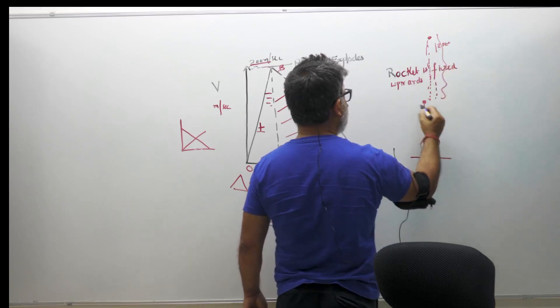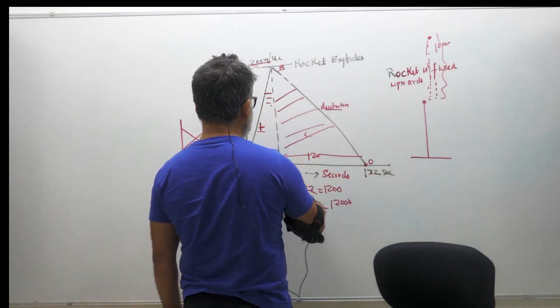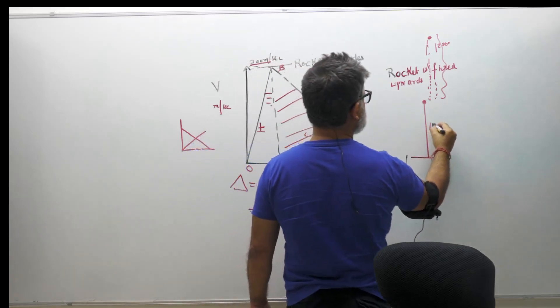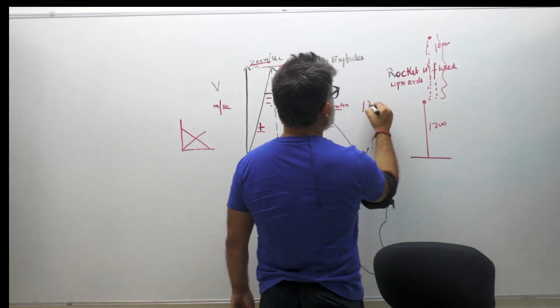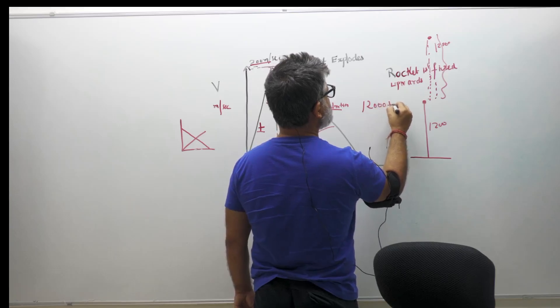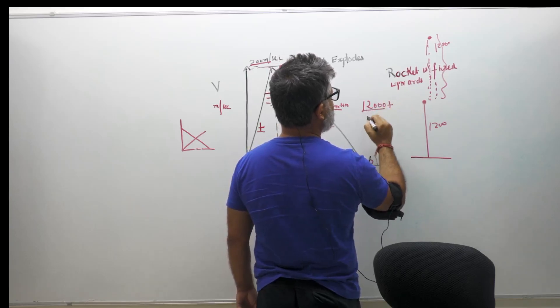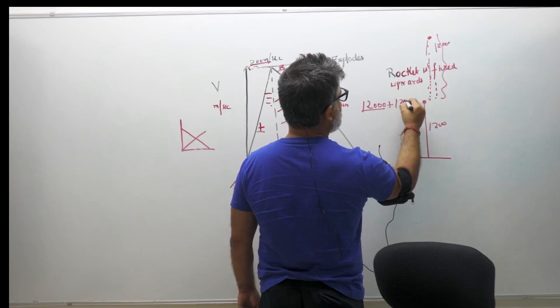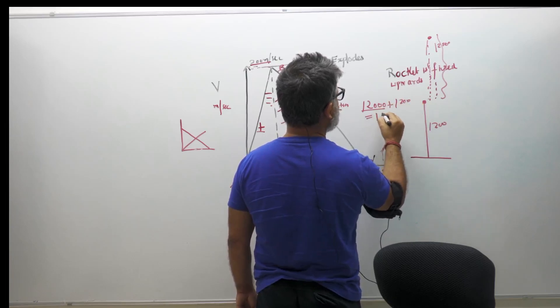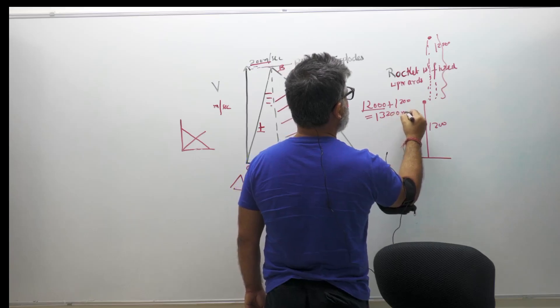And this was 1200 meters right after the explosion. So this was 1200. So the total height you will attain is 12,000 plus 1200, so this is 13,200 meters, which is your answer.